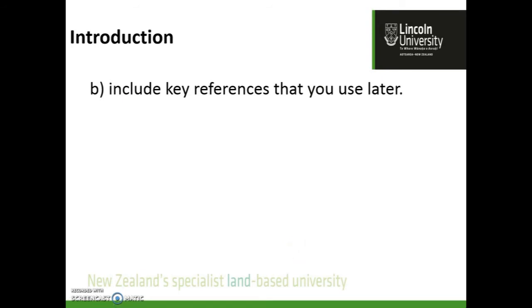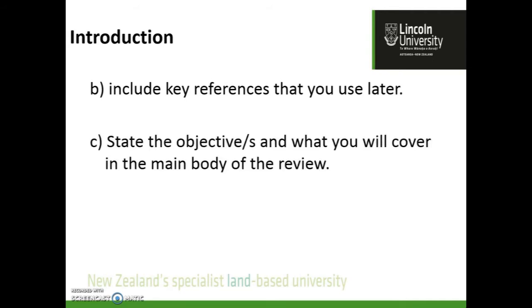Three or four key references is all you need in the introduction. At this stage you might have a total of 12 to 15 references in your literature review, but three or four of the key ones will be mentioned in this introductory section. At the end, in the last paragraph, you need to state the objectives and what you'll cover in the body of the review — the main topic areas you will and won't cover.